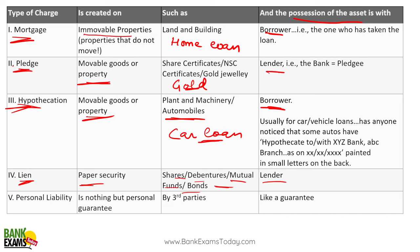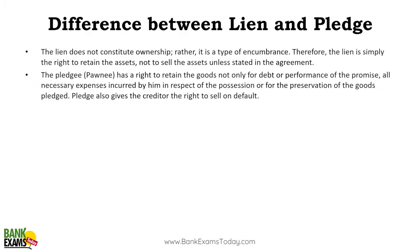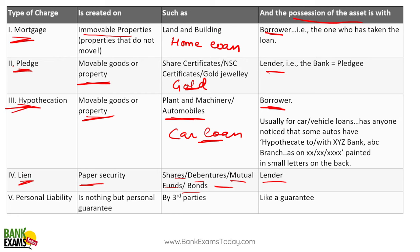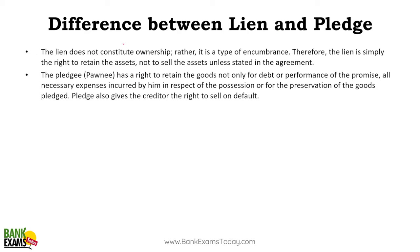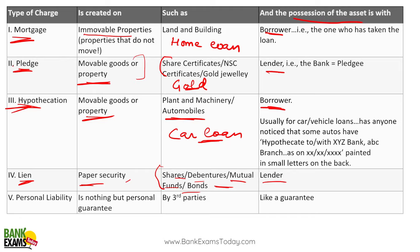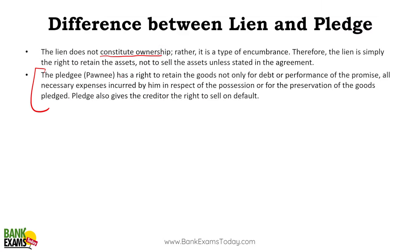Difference between lien and pledge: in a lien, the lender has possession — it applies to share certificates, mutual funds — it's a paper security. A lien does not constitute ownership; it is simply the right to retain the asset, not the right to sell it. In contrast, in a pledge, the pawnee has the right to retain the asset AND in case of a default, the pawnee can also sell that asset.